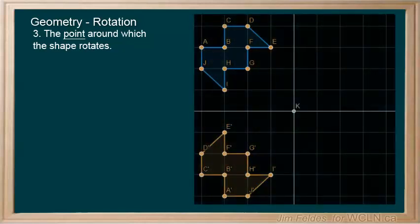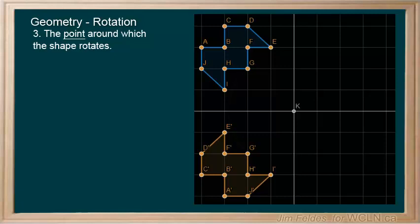As we learned with translations, any polygon can be rotated. This shape is being rotated a quarter turn counterclockwise. But we could also suggest it has been moved three quarters of a turn in the clockwise direction. Both ways get us to the same image.